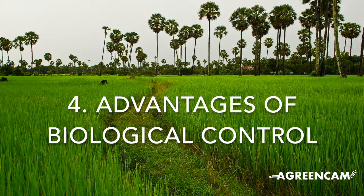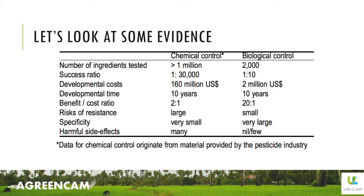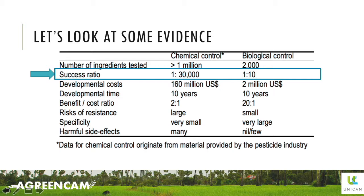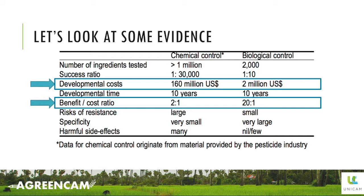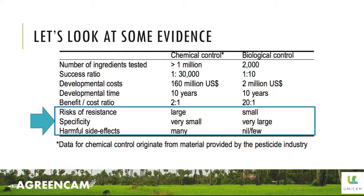The following table compares chemical control — the use of pesticides — and biological control. Looking at the success ratio, we see that when using biological control, more attempts are successful. Looking at the developmental cost and the benefit-cost ratio, we see that biological control is much cheaper to develop and leads to higher profits. Finally, biological control solves the main three problems of pesticides: the risk of the pest becoming resistant, the lack of specificity, and several harmful side effects.